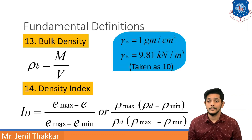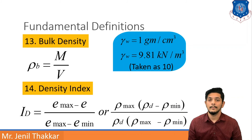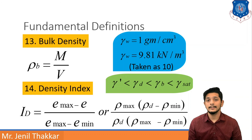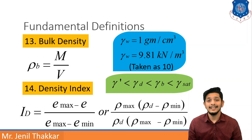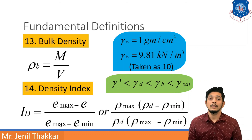Now let us understand units. The unit weight of water is 1 gram per centimeter cube. In kilonewton per meter cube, it is 9.81 kN/m³, but it is generally taken as 10 kN/m³. Now, for the hierarchy of unit weights: the lowest is submerged unit weight, followed by dry unit weight, then bulk unit weight, and the highest is saturated unit weight, gamma sat.